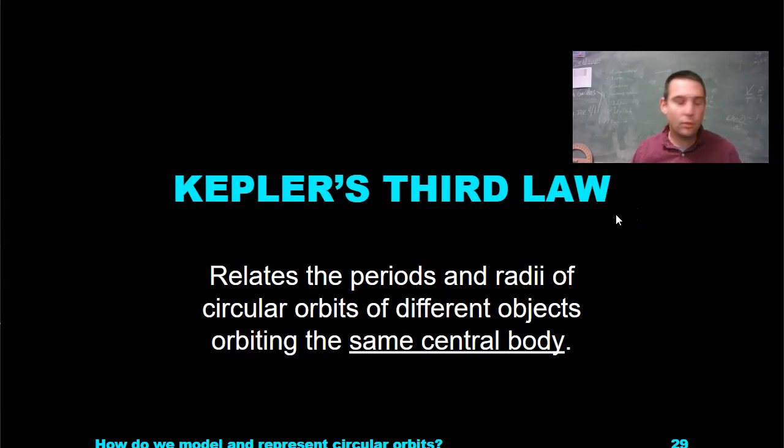Now to Kepler's third law. Wait, what about the first two? You may remember Kepler has three laws of planetary motion. Law number one is that all orbits are ellipses with the sun at one foci.